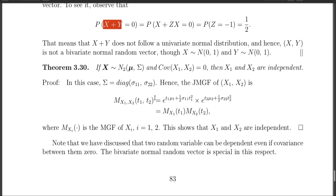Specifically, if (X1, X2) has a bivariate normal distribution such that the covariance between X1 and X2 is 0, then X1 and X2 are independent. This is very specific to the bivariate normal distribution — it is not true in general. So for bivariate normal, if you can show the covariance or correlation is 0, then the components are independent.